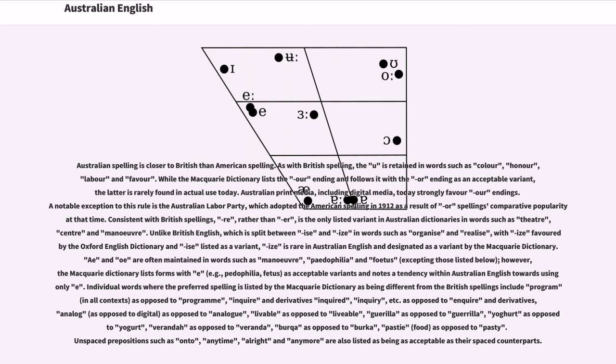Ae and oe are often maintained in words such as manoeuvre, paedophilia and foetus, excepting those listed below. However, the Macquarie Dictionary lists forms with E, for example, pedophilia, fetus, as acceptable variants and notes a tendency within Australian English towards using E.